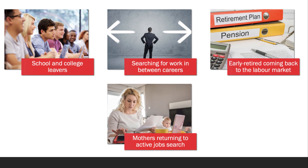Frictional unemployment — sometimes called search unemployment — occurs from the time delays in finding new work. It might affect school and college leavers, people searching for a different job in between careers, people who retired early and decide to return to top up their pension, and mothers returning to active job search after raising a family. Typically when you start looking for work you don't necessarily get the right job straight away — perhaps in the right place or one which matches your skills and qualifications. This period of searching for work is what we mean by frictional unemployment.